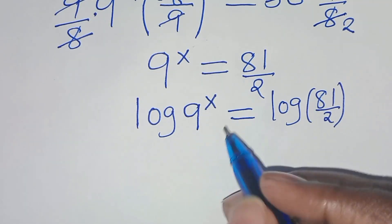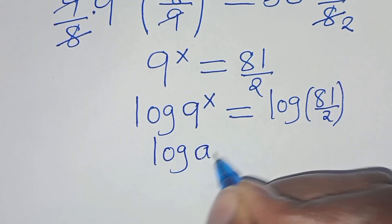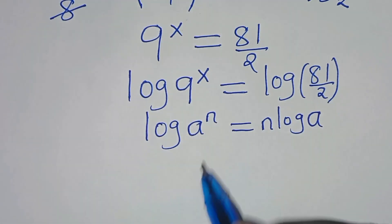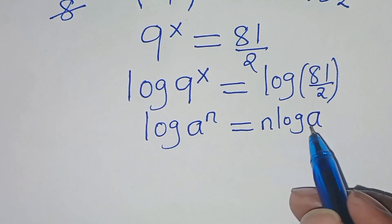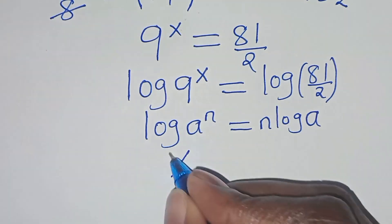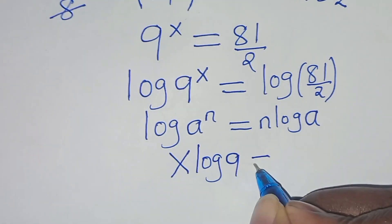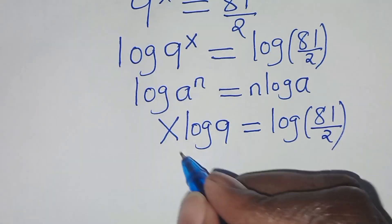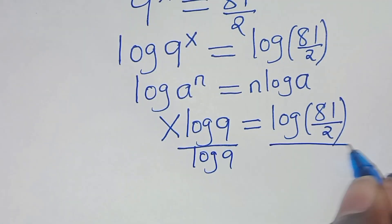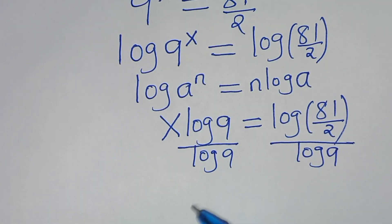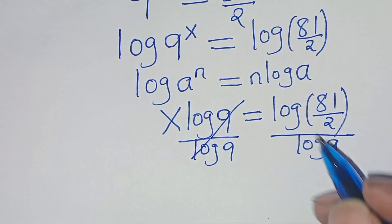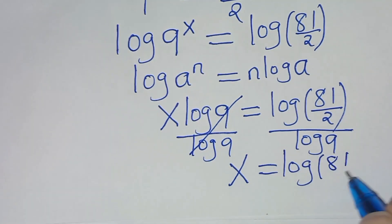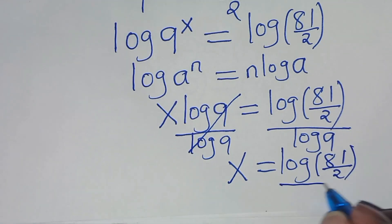So log of 9 to the power of x equals log(81/2), which we can express using the logarithm power property: log(9^x) becomes x·log 9, equal to log(81/2). Now let's divide both sides by log 9, so that x equals log(81/2) divided by log 9.